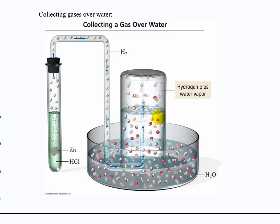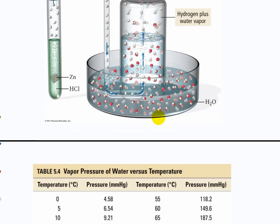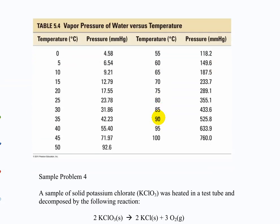To do problems like this, we have to account for the vapor pressure of water as part of the partial pressure in that system. To do so, you need a table like this — you would always be given these, you wouldn't have to memorize these numbers. It tells you that based on what the temperature is, what is the vapor pressure of water — in other words, what is the partial pressure of water in the vapor above or in this container.